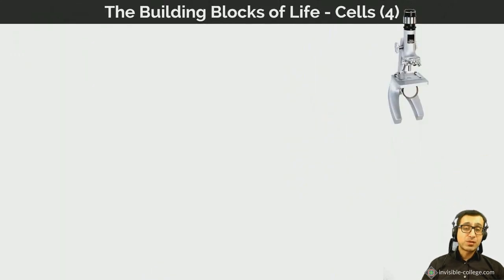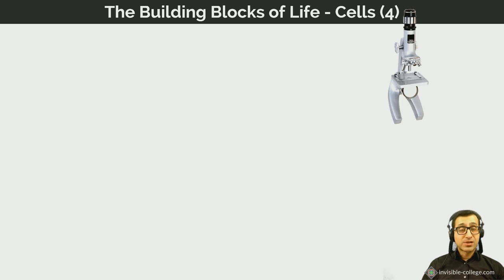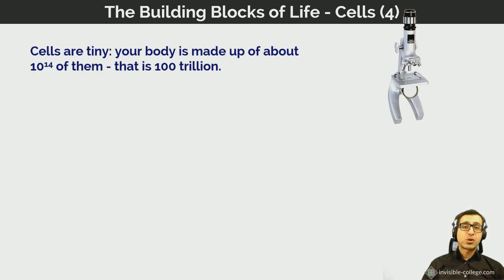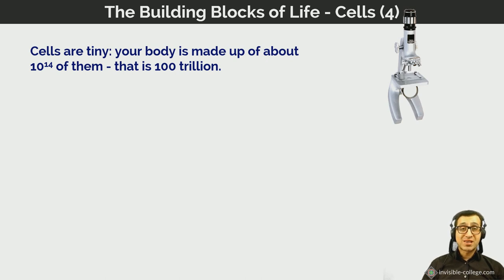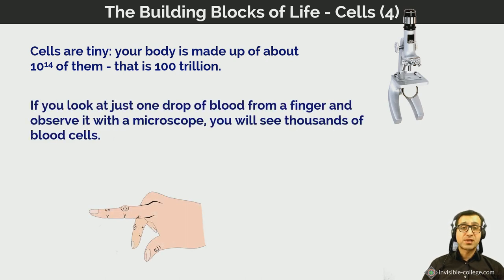Cells are very small, and your exam board requires you to have a good understanding of the general scale of cells and structures within cells and tissues. Your body is made up of about 10 to the power of 14 cells — that's a hundred trillion cells — which gives you a sense of just how small they are. If you look at just one drop of blood from a finger under a microscope, you should be able to see thousands of individual blood cells.